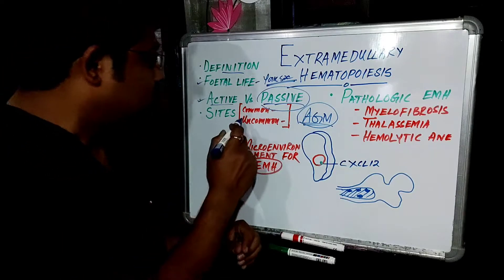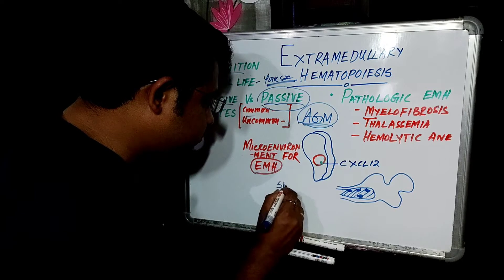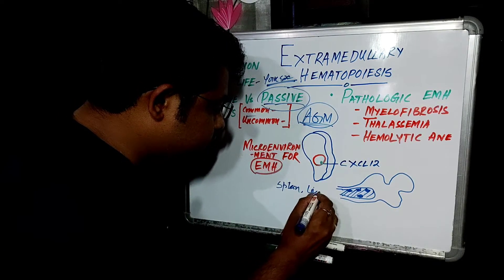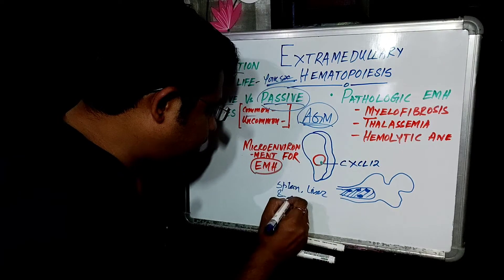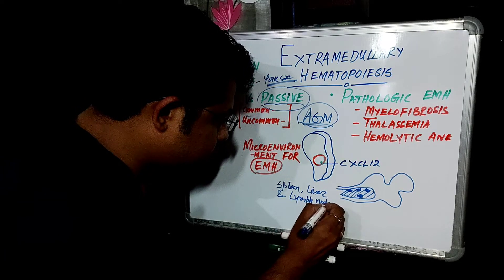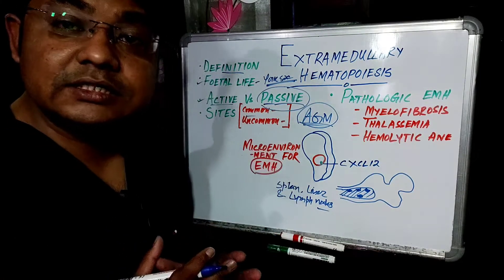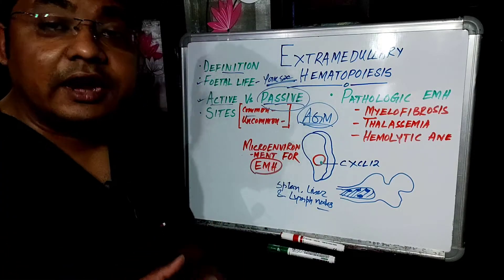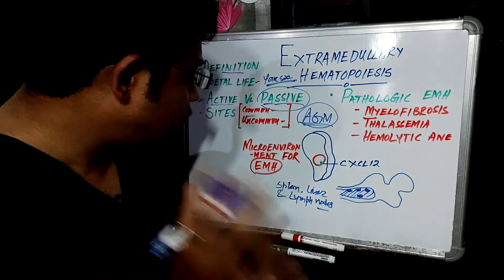The common sites of extramedullary hematopoiesis are the spleen, liver, and lymph nodes. The uncommon sites can include the breast, lung, heart, and even the soft tissues.